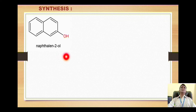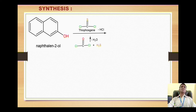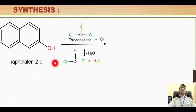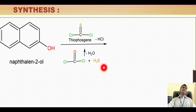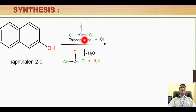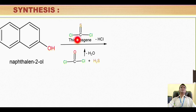The synthesis starts with beta naphthol, also called 2-naphthol or naphthalene-2-ol, which is clearly an example of a phenol. Beta naphthol is reacted with thiophosgene, which is prepared by reaction of phosgene (Cl-CO-Cl) with hydrogen sulfide. In that reaction, two hydrogens and one oxygen form a water molecule, and sulfur gets doubly bonded with carbon to give thiophosgene.